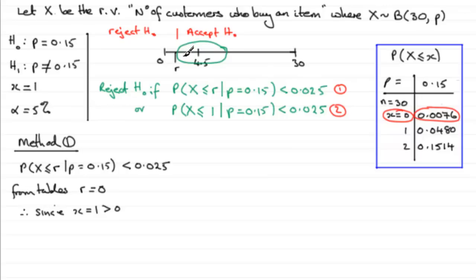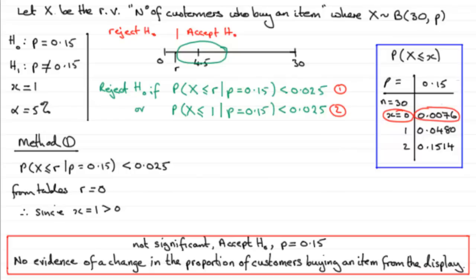So it's not significant. So we'd write a statement something like this: that it's not significant, accept H₀ - that is, that proportion p is 15% or 0.15 - and so there's no evidence of a change in the proportion of customers buying an item from the display.